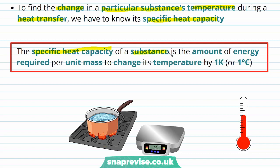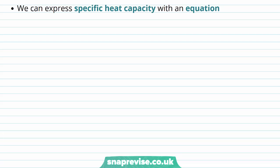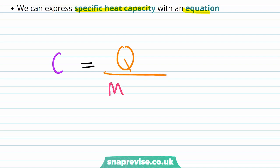The specific heat capacity of a substance is the amount of energy required per unit mass to change its temperature by one Kelvin, or one degree Celsius. So it's the thermal energy or heat per unit mass per degree Kelvin. It's better to express specific heat capacity as an equation: specific heat capacity C is equal to thermal energy transferred Q divided by mass times the change in temperature, which we represent as delta theta.